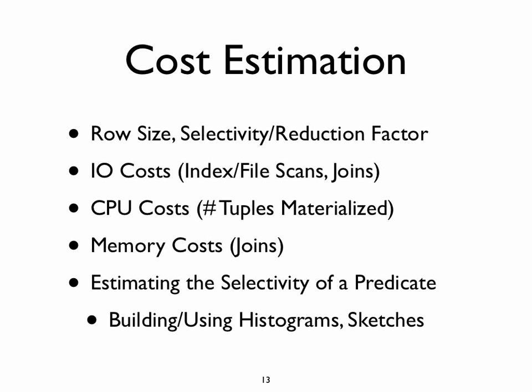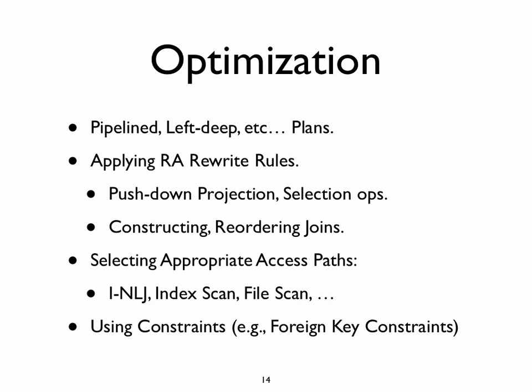We talked about optimization — in particular, different ways of representing plans that are amenable to optimization: pipeline plans, left-deep plans. We talked about relational algebra rewrite rules and in particular how these rules can be used both heuristically and as part of a cost-based optimizer to pick a query evaluation plan. We talked about different ways of picking access paths, including index nested loop, and also briefly about how different constraints can play into the optimization strategy.